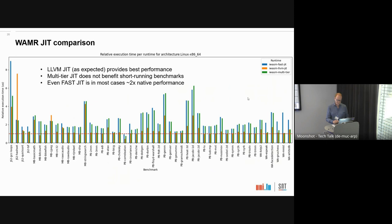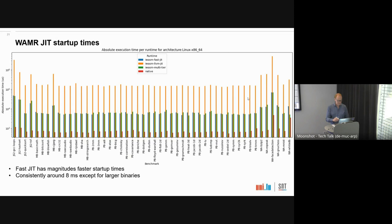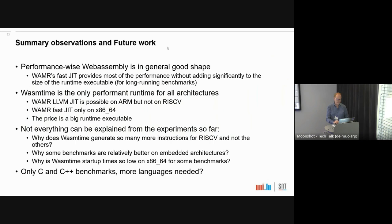The whole-application benchmarks benefit most from multi-tier because they run long enough that re-optimizing with LLVM makes sense. Even the fast JIT is in most cases around two times native performance, so still relatively fast compared to interpreted mode. For startup times, the fast JIT is consistently around eight milliseconds. The LLVM JIT is several orders of magnitude slower in terms of startup, but with multi-tier you get the benefit of both worlds for long-running applications: low startup time and good long-run performance.